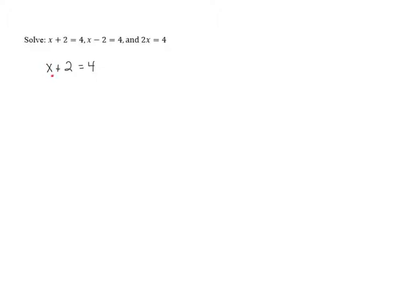In this case, the variable is x, so our goal is to get x alone. If we look at the left-hand side of the equation, x isn't alone yet. There's something being done to x — 2 is being added to x. Whenever something is being done to the variable, to get the variable alone, we want to do the opposite. The opposite of adding 2 is subtracting 2, so we need to subtract 2 to get x alone.